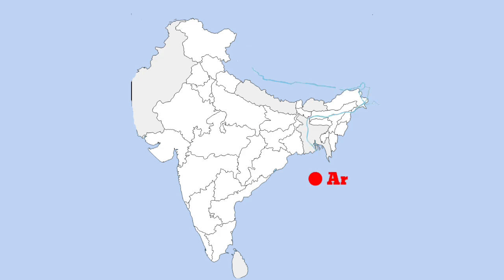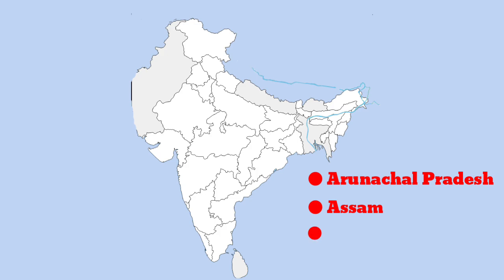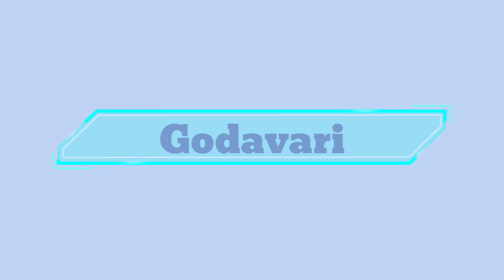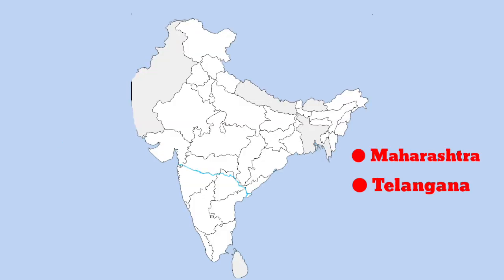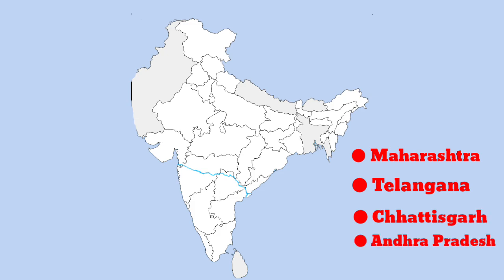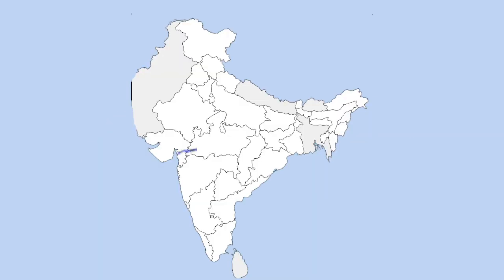Brahmaputra: it flows through the states of Arunachal Pradesh and Assam, and it flows through China, India, and Bangladesh. Godavari: it flows through the states of Maharashtra, Telangana, Chhattisgarh, and Andhra Pradesh. It is the largest peninsular river in India.